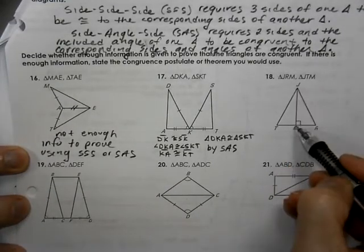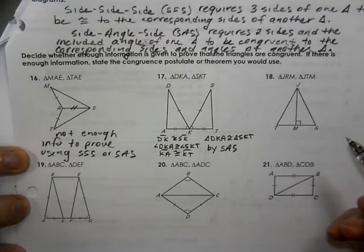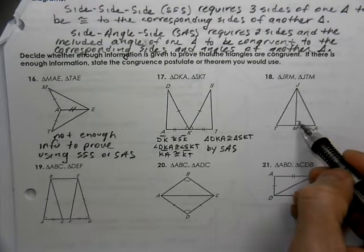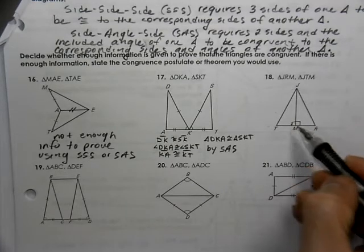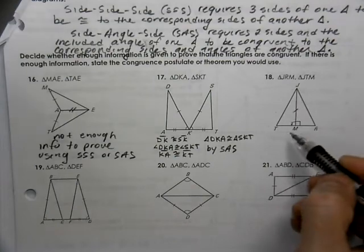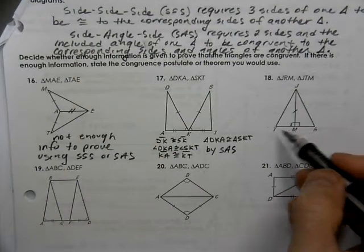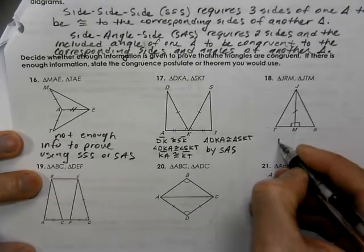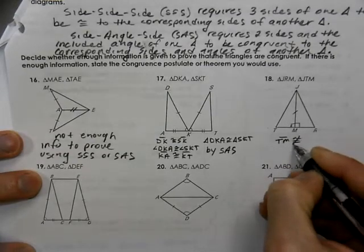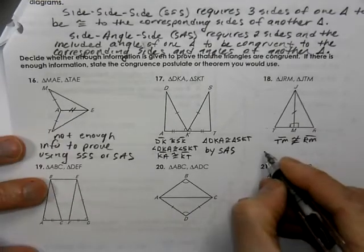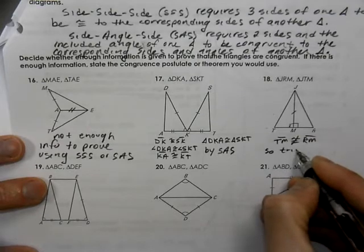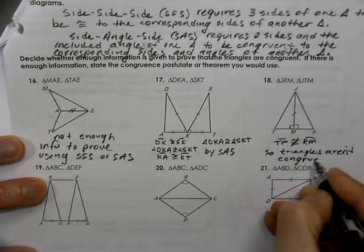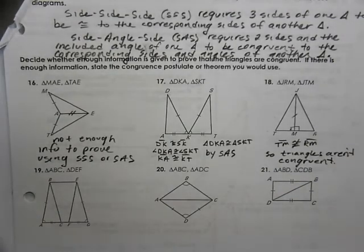Number 18: triangles JRM and JTM. We know we have 90-degree angles, which makes them right angles — and the right angles are congruent. We have the reflexive side the same, but it doesn't give any hint that M is the midpoint. We don't know that TM is congruent to RM; it doesn't say it anywhere. So TM is not congruent to RM, meaning the triangles aren't congruent.